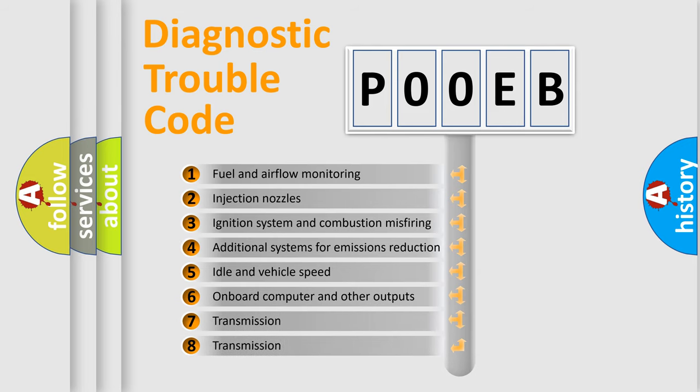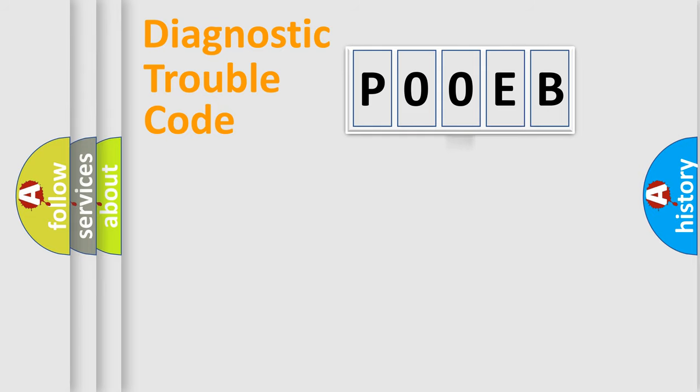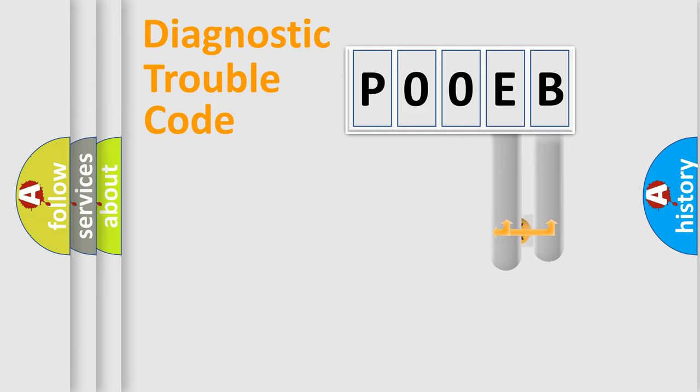The distribution shown is valid only for the standardized DTC code. Only the last two characters define the specific fault of the group.